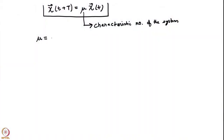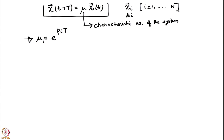Because μ is a characteristic number of the system, we will set μ = e^(ρ·T). In general I would have n different solutions χᵢ, i going from 1 up to n, and for each such χᵢ there is a corresponding μᵢ. So μᵢ = e^(ρᵢ·T), which is just a definition of ρᵢ. We do this because we want to introduce an exponential in our final answer. So ρᵢ = (1/T)·log(μᵢ).